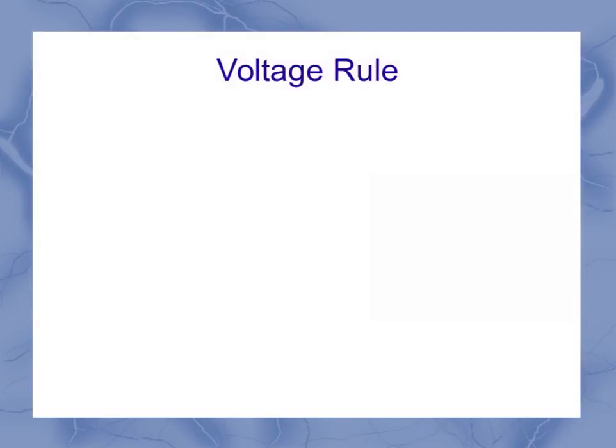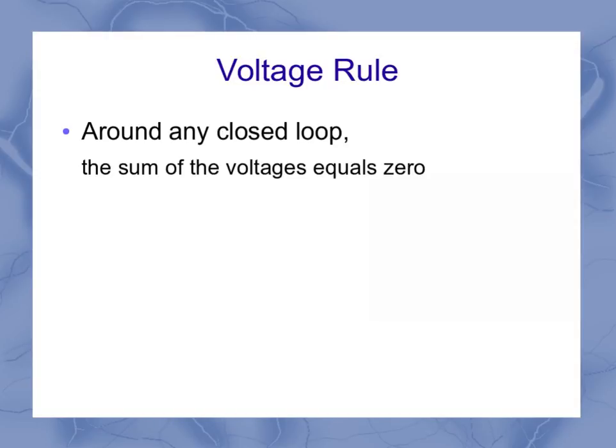Now I could look at the voltage rule. For the voltage rule, around any closed loop, the sum of the voltages equals 0.